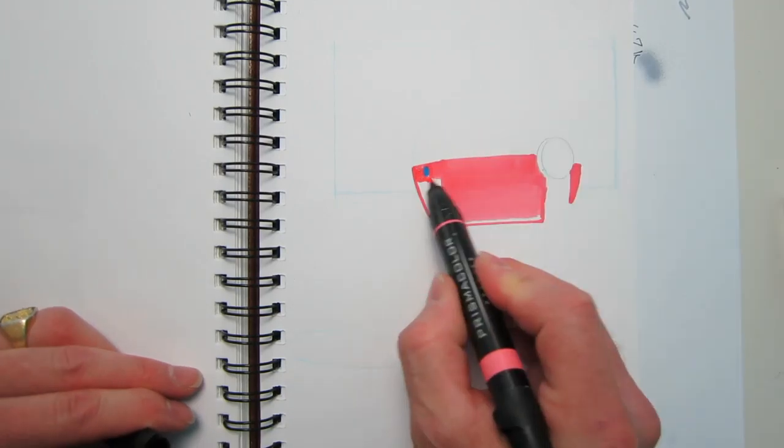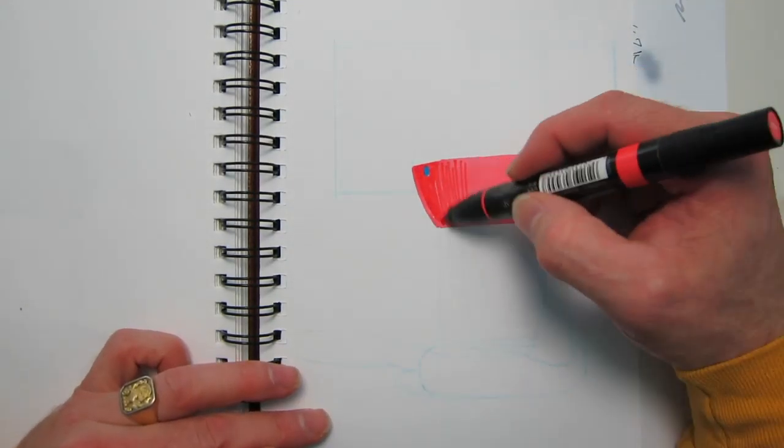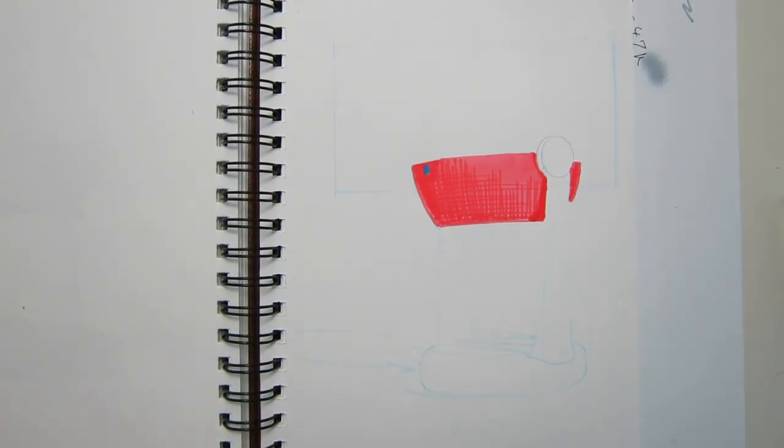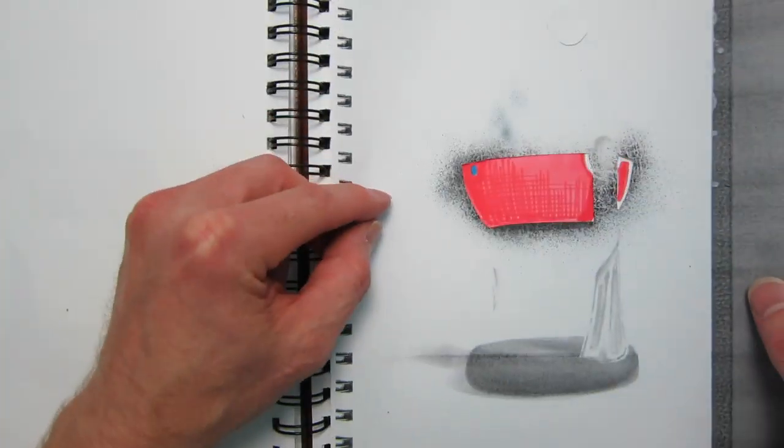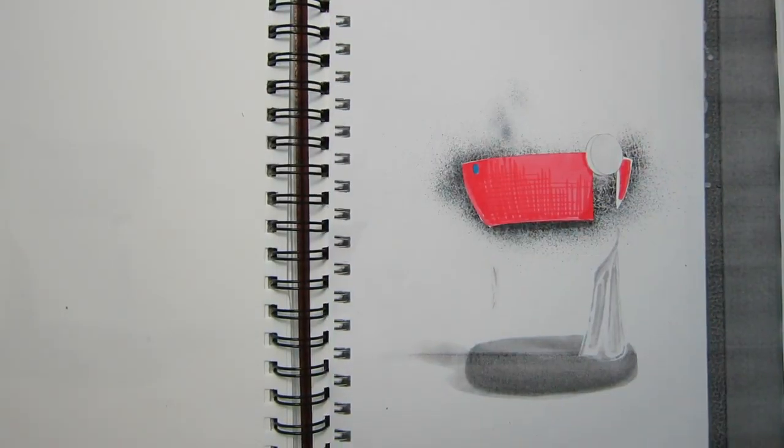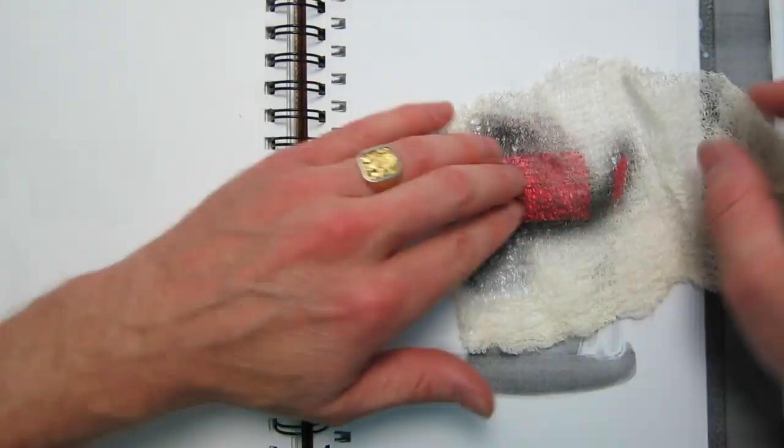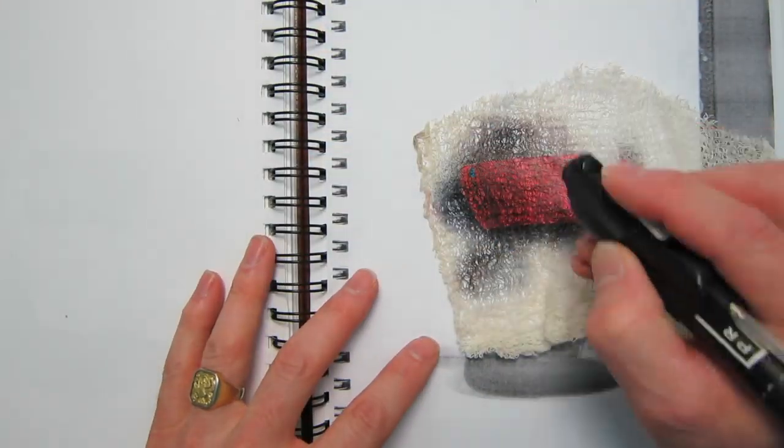I'm going to lay down some red marker in a little bit of a grid pattern to show the fabric texture. From there, I'm going to create a paper template that I photocopy the original artwork on and I cut out the part where I want to airbrush through.